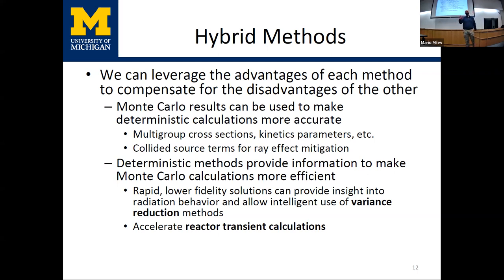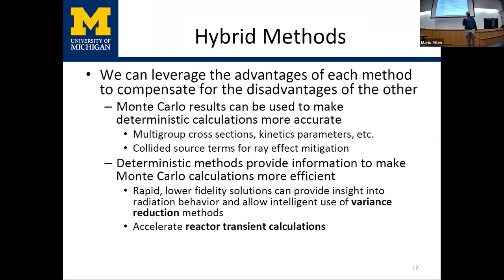Both methods have advantages and disadvantages, so hybrid deterministic Monte Carlo methods leverage the advantages of one to mitigate the disadvantages of the other. Monte Carlo is commonly used to make deterministic methods more accurate — for example, generating multigroup cross sections for a deterministic solver. Likewise, deterministic methods can provide information to accelerate Monte Carlo transport. That's what I'll focus on today: variance reduction methods and accelerating reactor transient calculations.